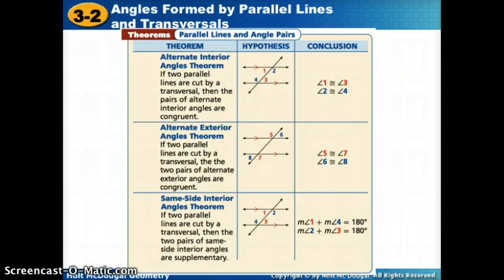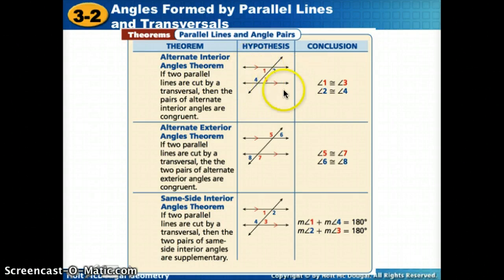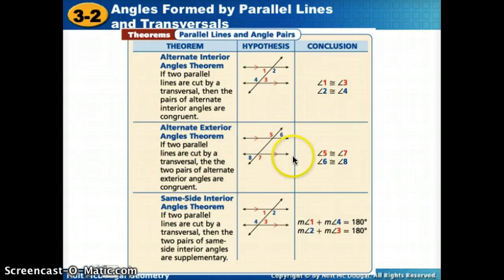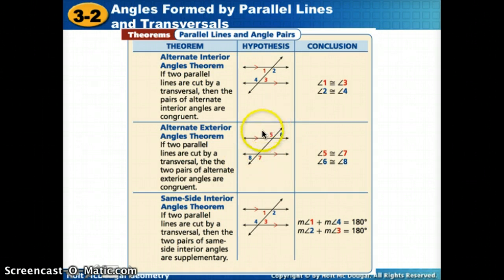Let's look at the other relationships when two lines are parallel. The alternate interior angles theorem says alternate interior angles are also congruent, so angle 1 has the same measure as angle 3, and angle 4 has the same measure as angle 2. The alternate exterior angle theorem says that if two parallel lines are cut by a transversal, then the two pairs of alternate exterior angles are also congruent — they have equal measures.